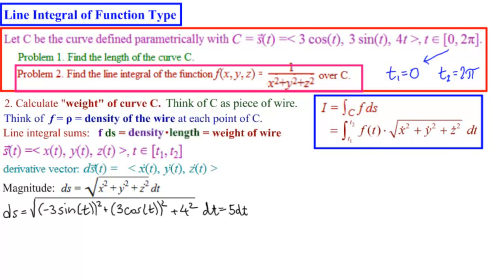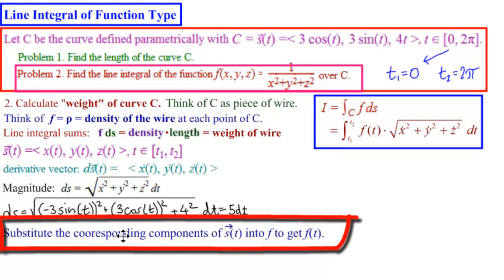How do we find f of t? The idea is that f is a function of x, y, z. This is the x component of s, the y component, and the z component. We substitute this for x, this for y, and this for z. So what we are doing is substituting the corresponding components of the curve, of the vector parametrization of the curve into f to get f of t.